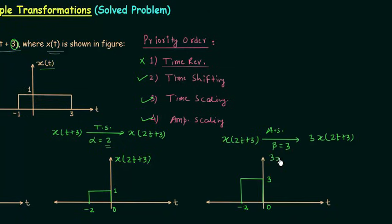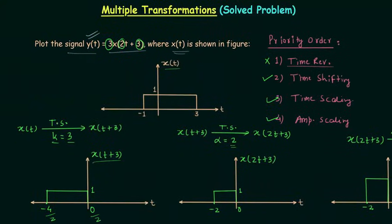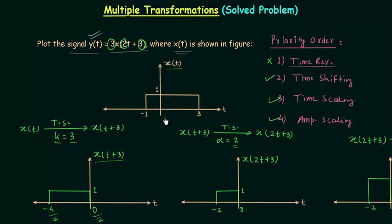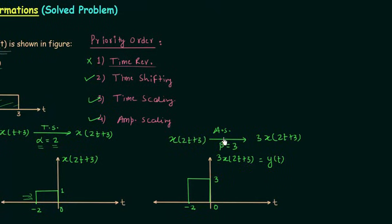So the amplitude of the final signal is equal to 3. The final signal is 3x(2t+3), or we can say y(t). Now we will analyze all these waveforms. In the first operation we have time advance because k is positive, and you can see the whole waveform is shifted to the left — this case is also called left shifting. In the second operation we perform time scaling and alpha is greater than 1, which means this is the case of compression; comparing the two signals you can see this signal is compressed.